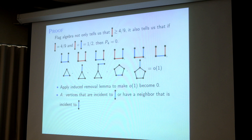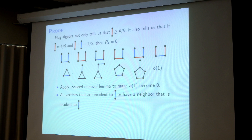So first I use the induced removal lemma to say that instead of little-o, I can change little-o n² edges to make these structures not appear. Then I partition the vertices under certain rules. The induced removal lemma is already developed — it's a regularity-type result, not flag algebra, that says you can remove some edges to make the induced density zero. So we partition vertices to find one part that is a clique and the other part is a bipartite graph, and then we are done.